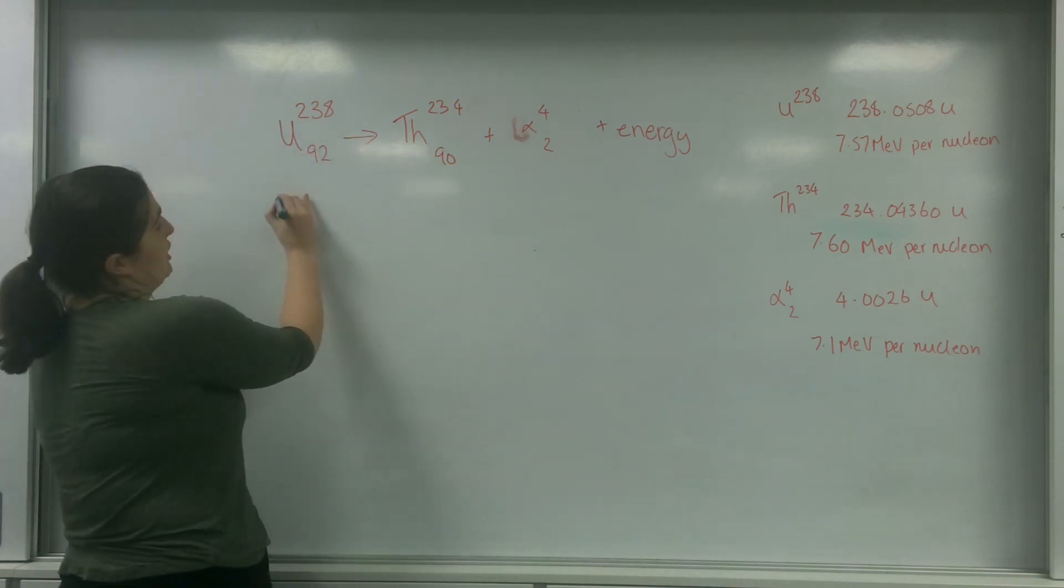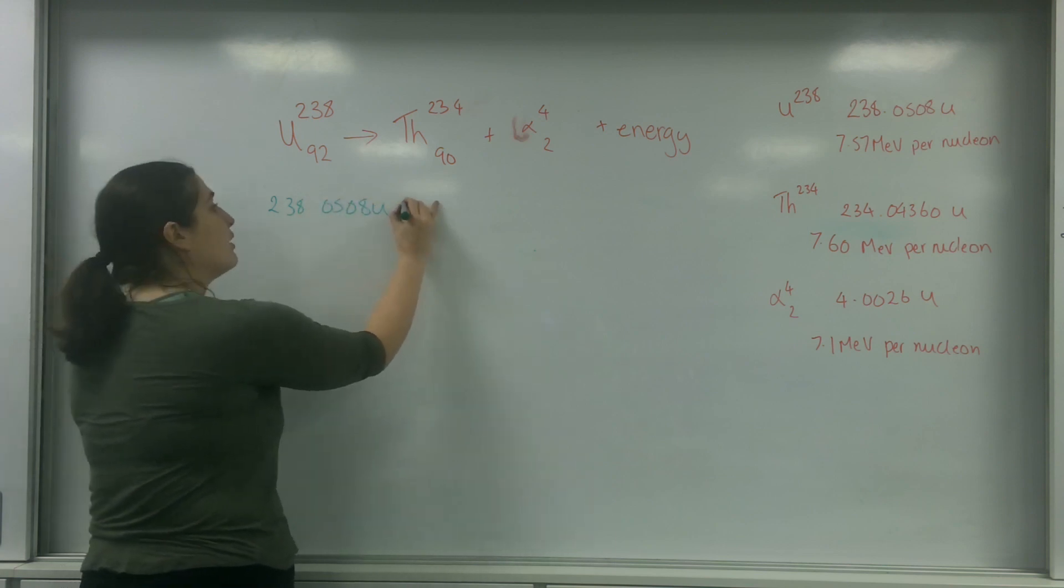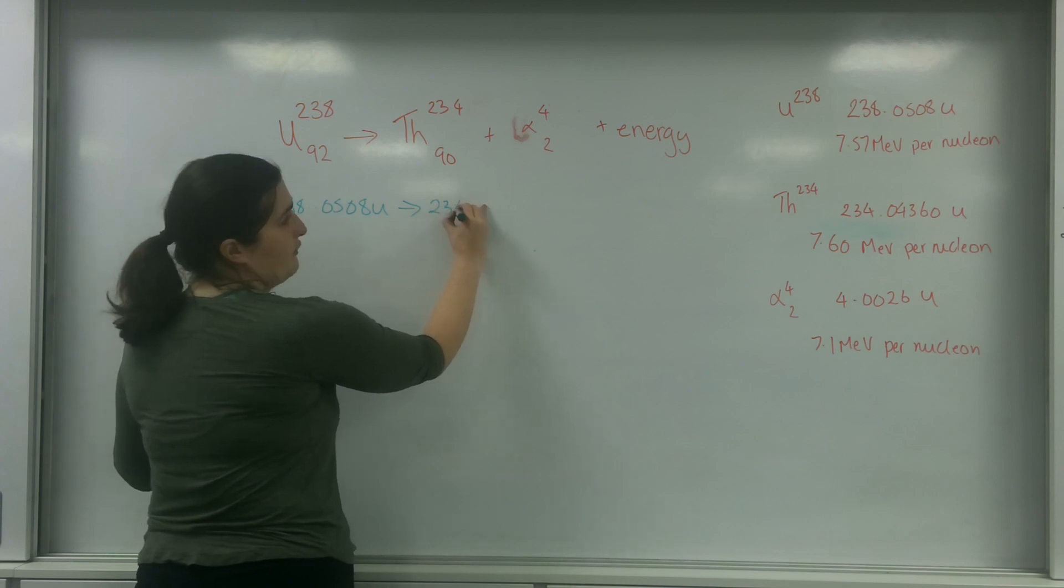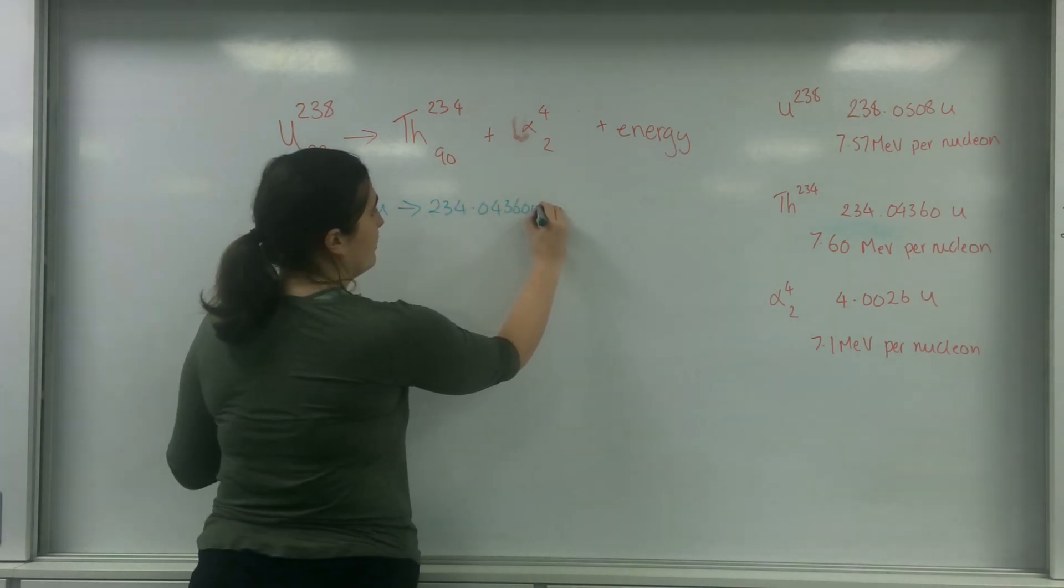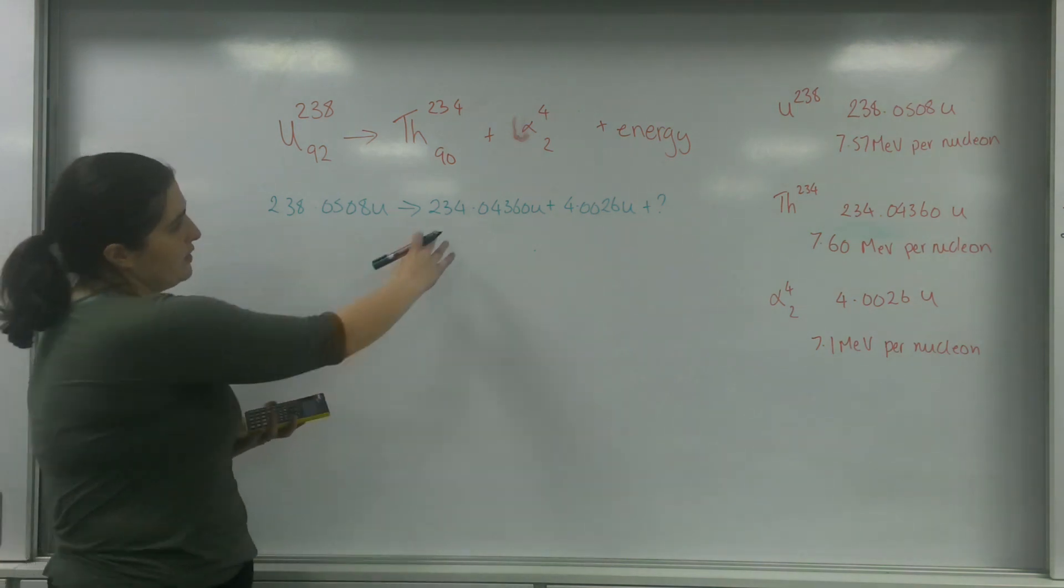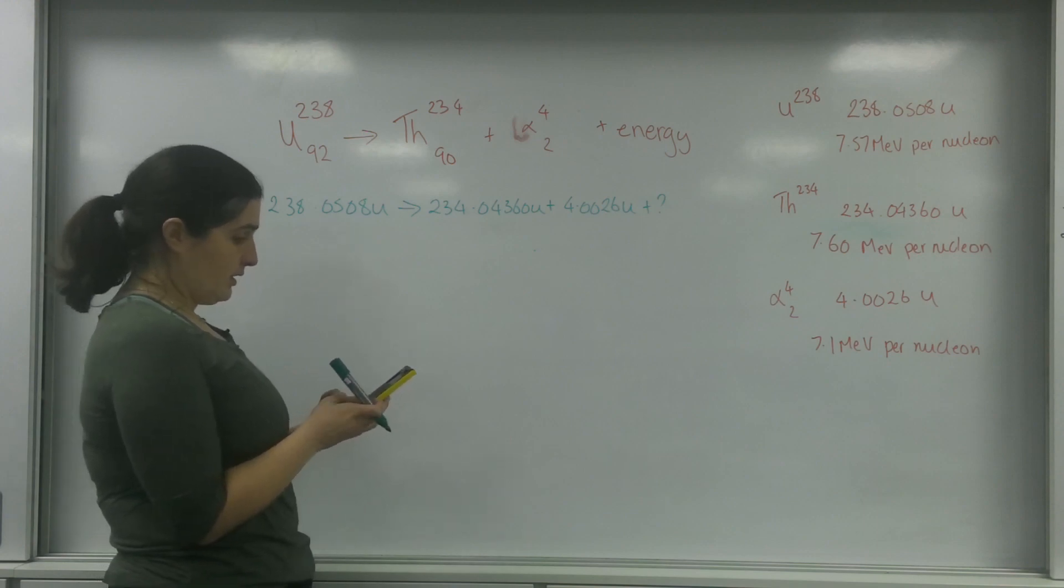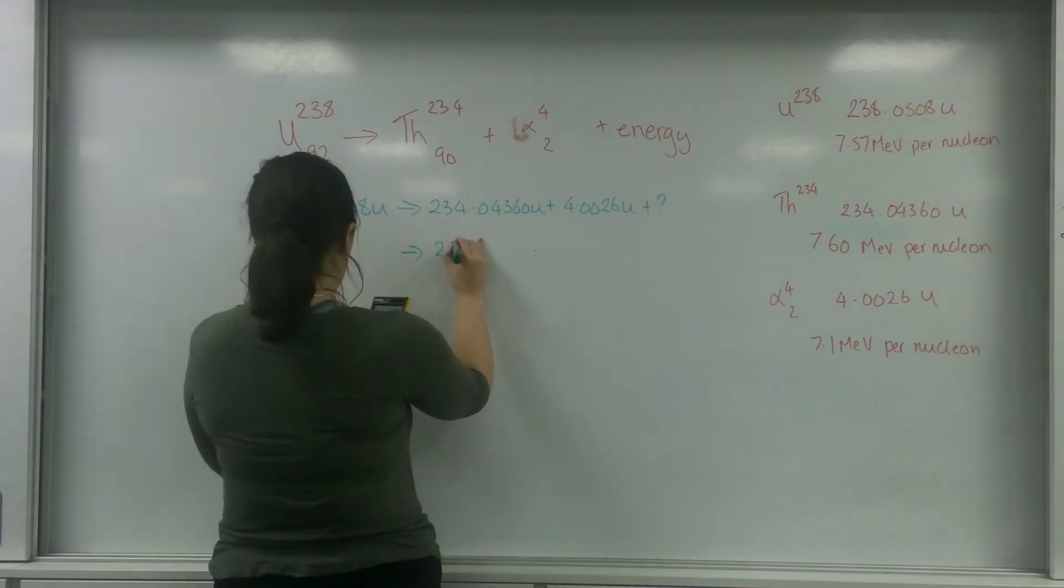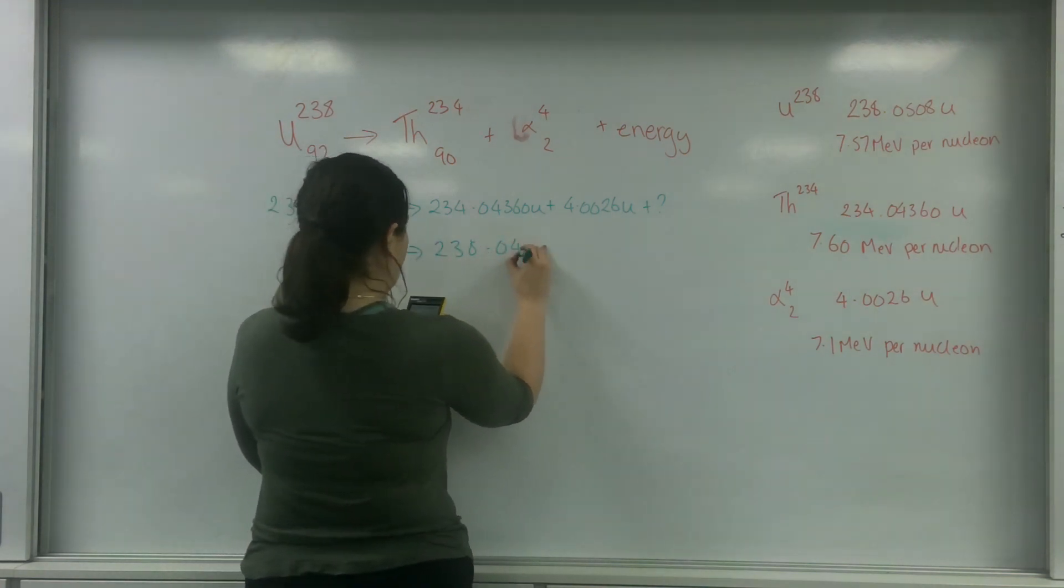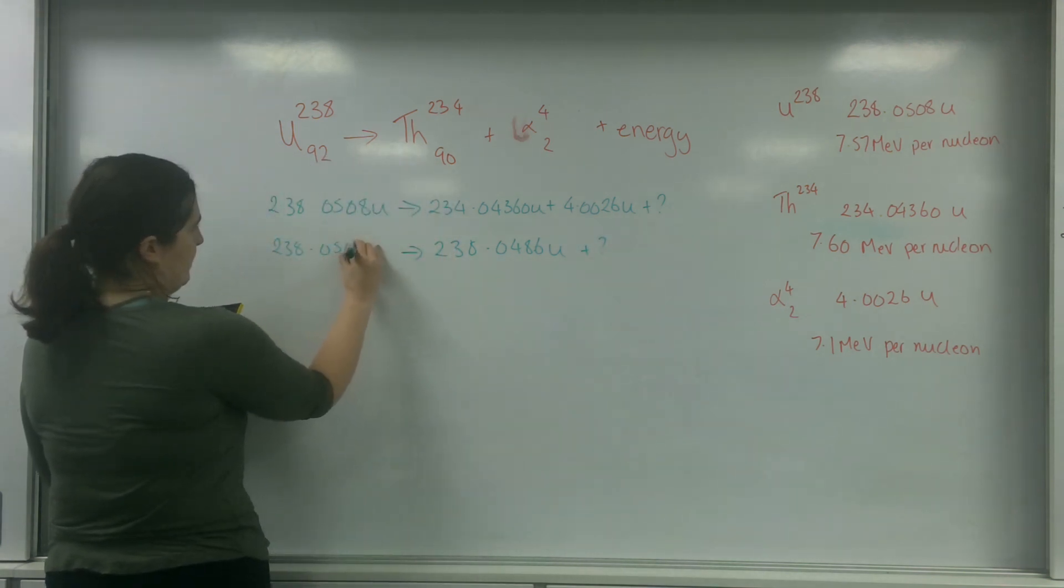On this side of my equation I have 238.0508U going to 234.0436U plus 4.0026U plus my question mark. If I add those two together, 234.0436 plus 4.0026, I end up with an answer of 238.0486U plus my question mark equals 238.0508U.